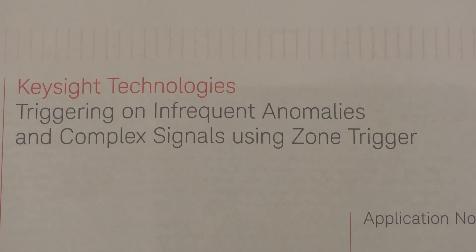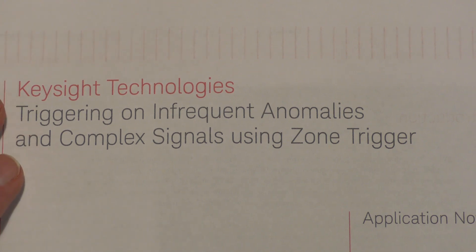Before we look at the next example, I did want to show you this application note that I found on the Keysight web page entitled, Triggering on Infrequent Anomalies and Complex Signals Using Zone Trigger. I found it very useful and while the specifics that are described in here apply to Keysight oscilloscopes, the general ideas apply to any oscilloscope that has a similar type of zone trigger.